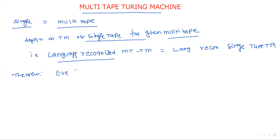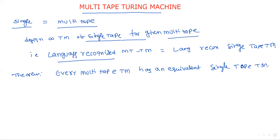The theorem is: every multi-tape Turing machine has an equivalent single-tape Turing machine. Here, equivalent means not in terms of speed but in terms of what it performs — the exactly the same task, that is, the same languages are recognized by both multi-tape and single-tape. Before implementing the single-tape Turing machine, you have to know how to represent a multi-tape Turing machine.